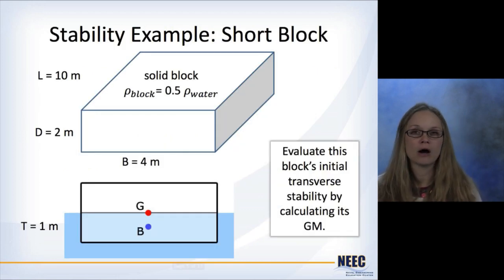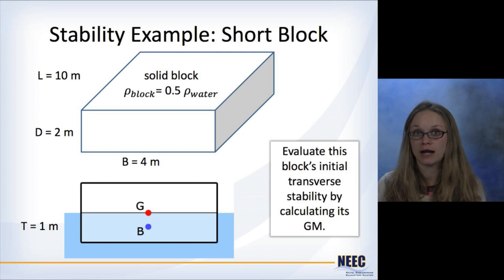So here's a quick example. We've got a block here. It's just a solid block. Its density is half that of water, which means that it will float half in the water and half out of the water. It's got a length of 10 meters, a depth of 2 meters, beam of 4 meters, and then a draft of 1 meter. So to evaluate this block's initial transverse stability, we're going to calculate its GM.